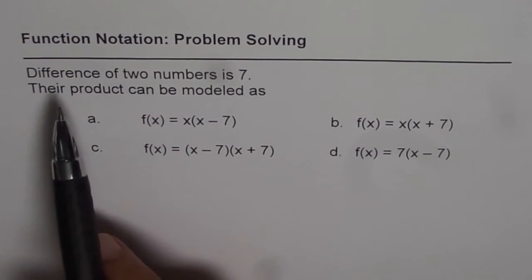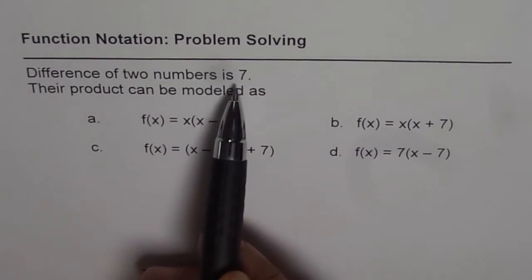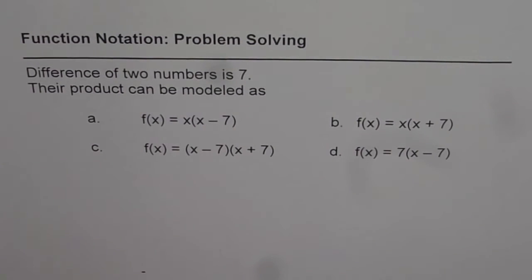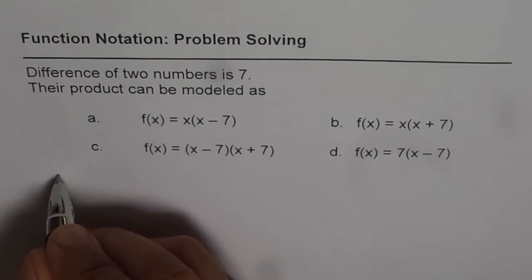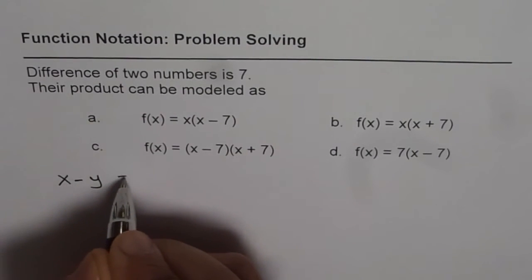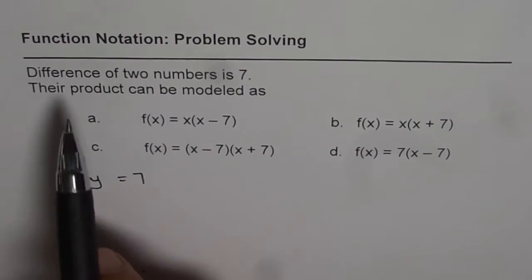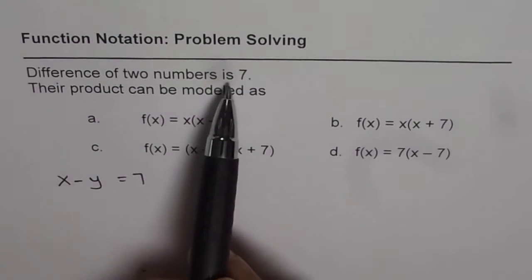We'll write this equation using function notation. The question here is, difference of two numbers is 7. So let us say that the two numbers are x and y. So we say x minus y equals to 7. That is the meaning of difference of two numbers is 7.